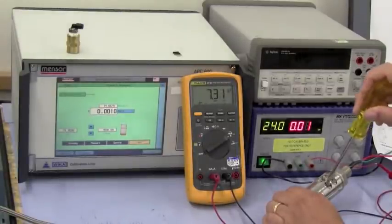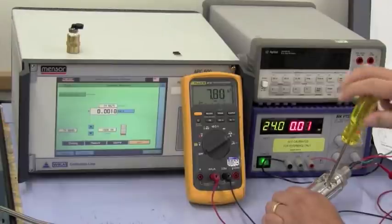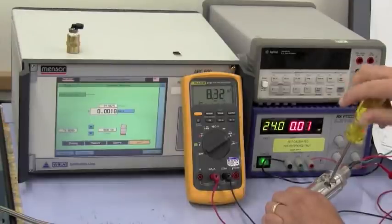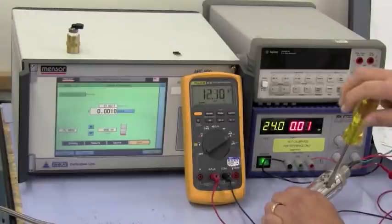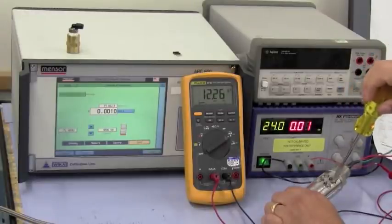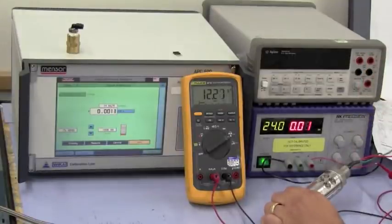And now I'm going to use my screwdriver to adjust the span button until I read 12.20 on the multimeter. And we'll try to get as close as possible using the span. And then we can use the fine span button above in order to fine tune and tweak in the value. And there we are.